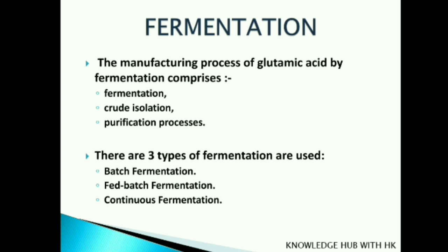Glutamic acid commercial production by microbial fermentation provides 90 percent of the world's total demand, with the remaining 10 percent met through chemical methods. The manufacturing process by fermentation follows these steps: fermentation, then crude isolation, then purification. There are three types of fermentation used: batch fermentation, fed-batch fermentation, and continuous fermentation.